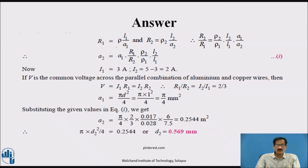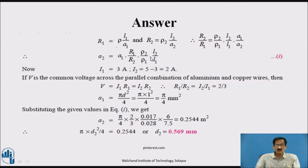So R1/R2 = I2/I1 = 2/3. Substituting in the equation, and using A1 = πD²/4 = π/4 mm², we substitute into the formula to find the area A2 for the copper wire. Once the area of the copper wire is obtained, the diameter of the copper wire can also be determined.